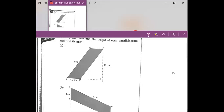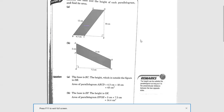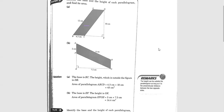Can you go up a little? There are some words covered. Niko can't see the screen — let me make the screen bigger. Is it better? The base is BC. The height, which is outside the figure, is DE.